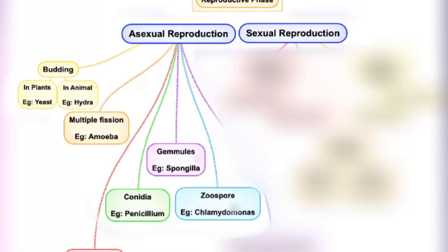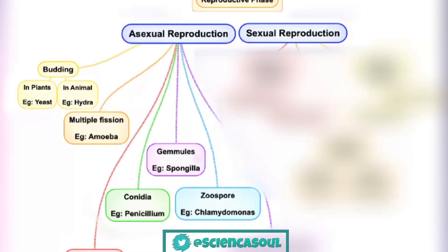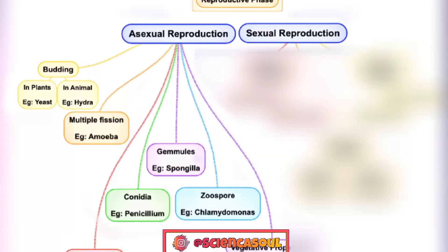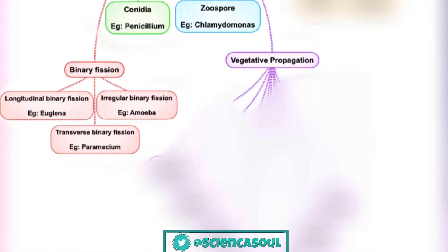Next is zoospore — for example, Chlamydomonas. A zoospore is a motile asexual spore that uses a flagellum for locomotion; it is also called a swarm spore. Next is vegetative propagation, which is also divided into many parts.